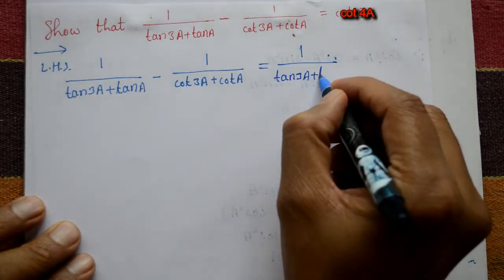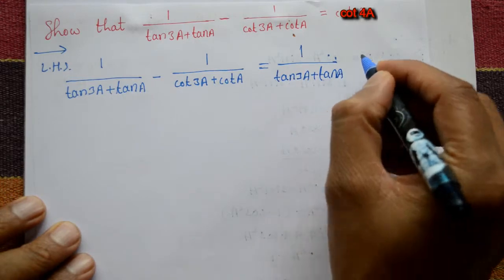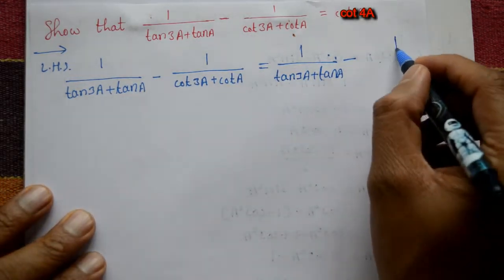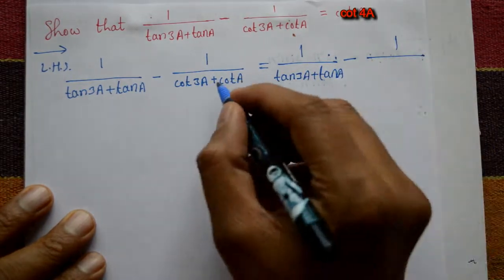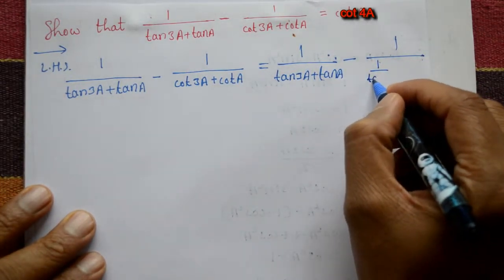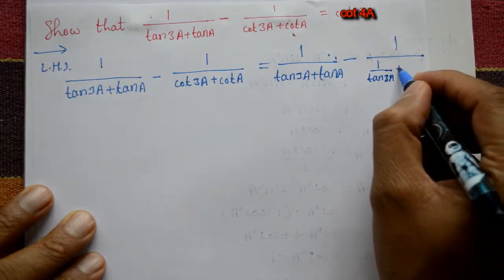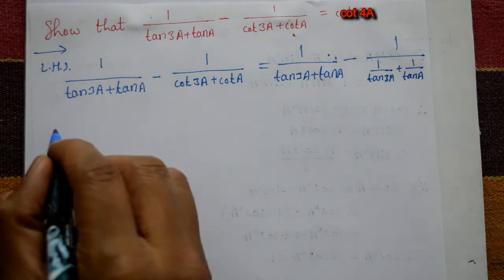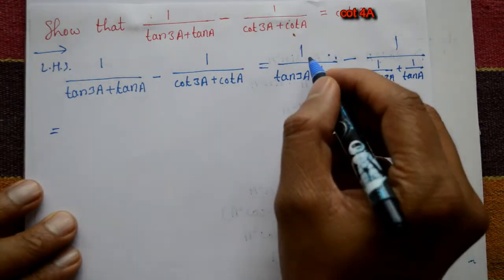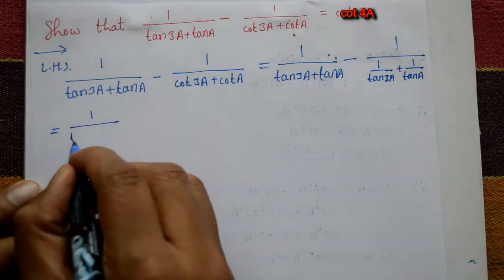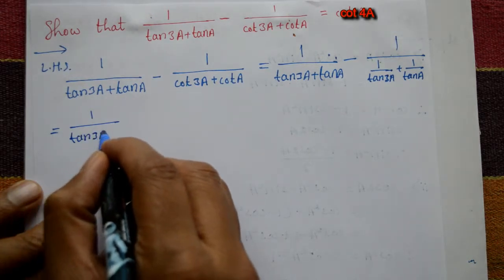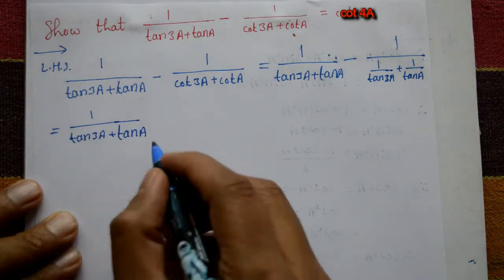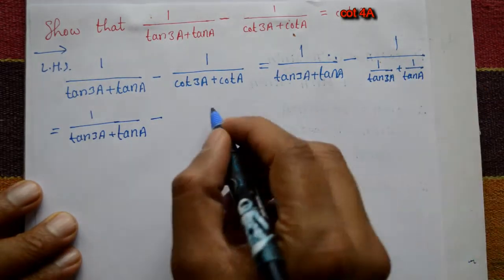Minus — now cot means 1 by tan, so 1 upon cot(3a) plus cot(a) becomes 1 upon (1/tan(3a)) plus (1/tan(a)). The first term has no change as it is: 1 upon tan(3a) plus tan(a), then minus this converted expression.